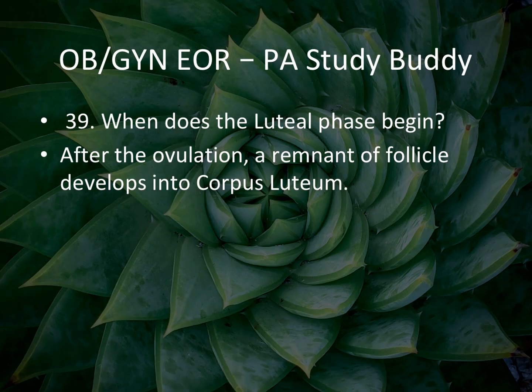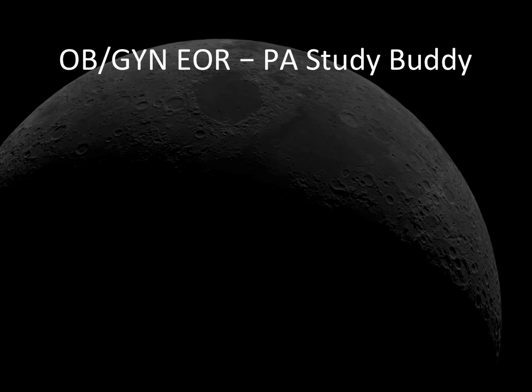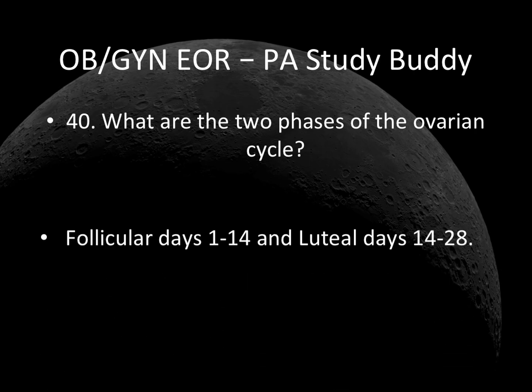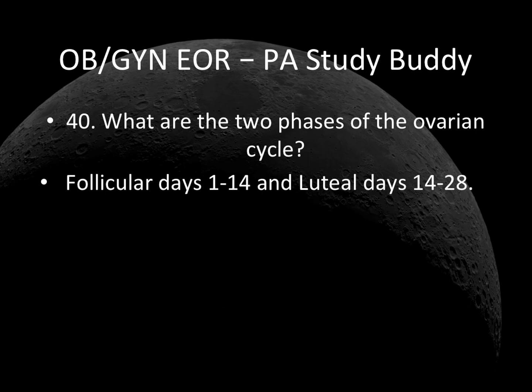Question 39: When does the luteal phase begin? After ovulation, the remnant of the follicle develops into corpus luteum — luteal phase begins after ovulation. Question 40: What are the two phases of the ovarian cycle? The two phases are follicular, days 1 to 14, and luteal, 14 to 28.